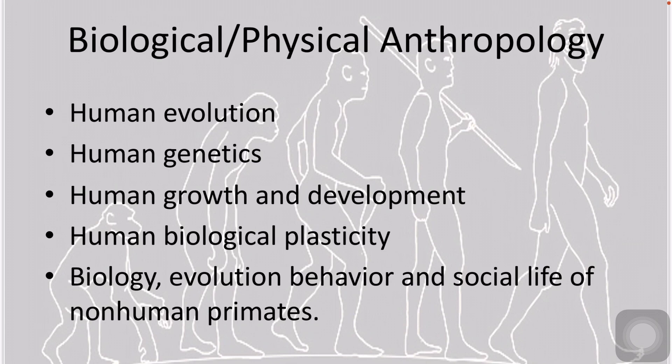human genetics, human growth and development, human biological plasticity — that is, how the body's ability to change as it copes with stress such as heat, cold, and altitude — and fifth, the biology, evolution, behavior, and social life of monkeys, apes, and other non-human primates.